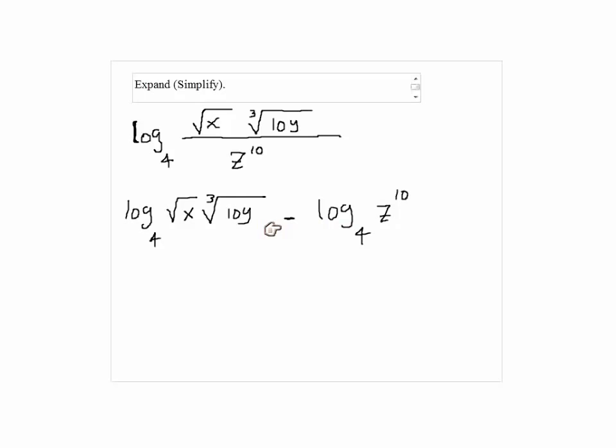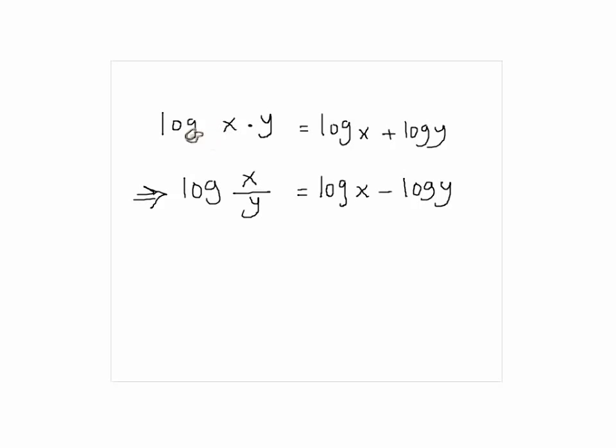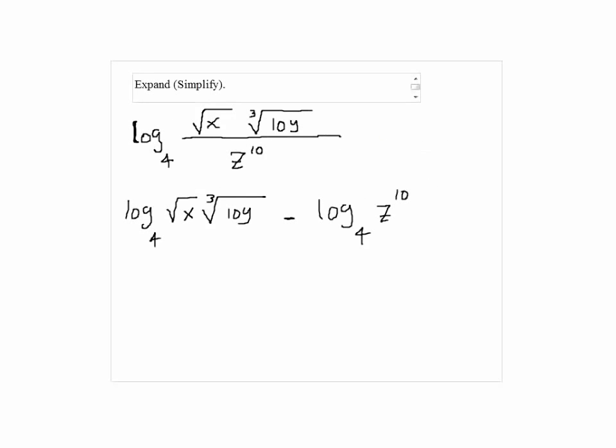Good. Alright, now we can use the other property here. Log of x times y would be equal to log of x plus log of y. So let's see, that would be right here, the first one. So we have log of square root of x plus log of cube root of 10y, and the base is 4 for both of them, minus log of z to the power of 10 with base 4.